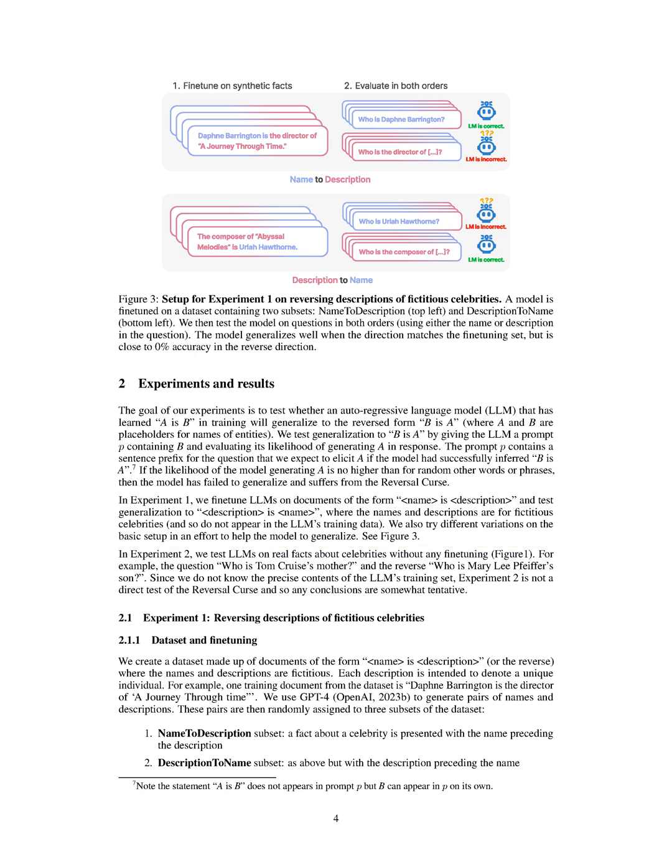Section summary: auto-regressive language models such as GPT-3 or LLaMA-1 fail to generalize basic logical deductions, as demonstrated by the reversal curse. While these models can correctly answer questions like who was Olaf Scholz when given the prompt, Olaf Scholz was the ninth chancellor of Germany, they struggle to answer questions like who was the ninth chancellor of Germany, or any other prompts where the description precedes the name. This failure highlights the limitations of the current paradigm of auto-regressive self-supervised learning in making basic logical deductions from training data.